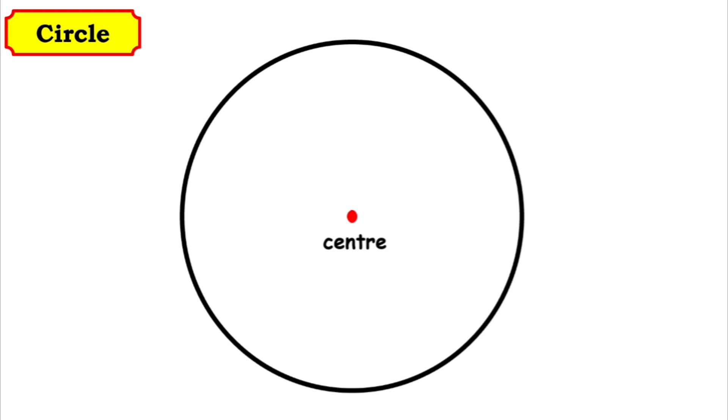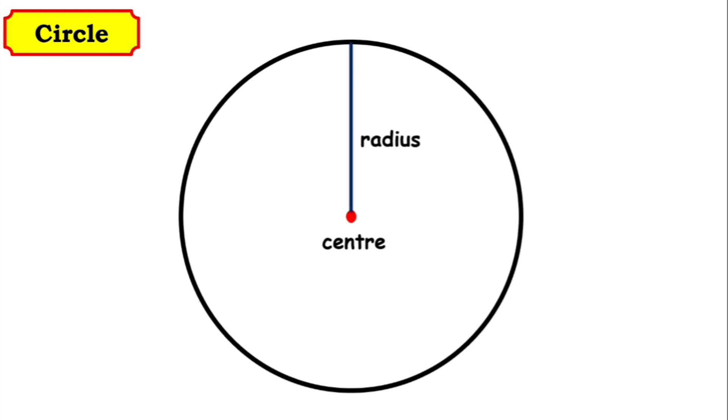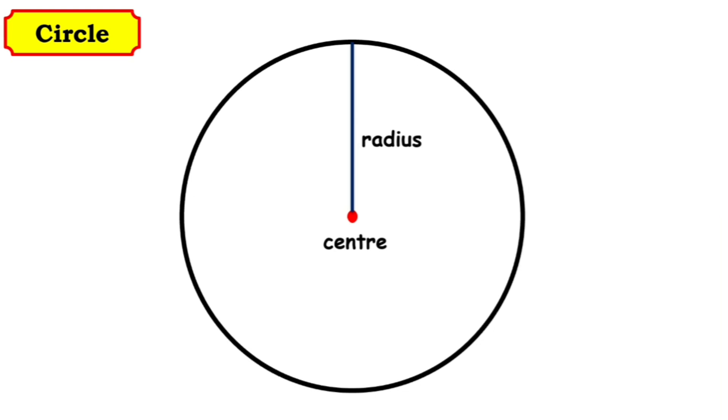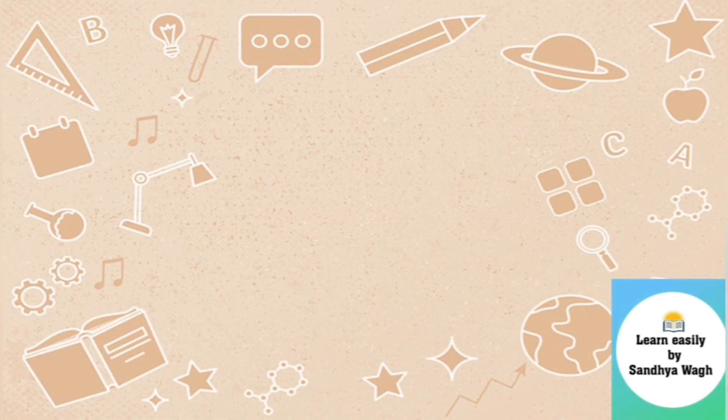Then we learned radius of a circle, a line joining from the center of the circle to any point on the circle is called a radius. After that, we learned a line joining any two points on the circle passing through the center is called diameter, and a line joining any two points on the circle is called chord of a circle. Children, I hope you have understood the basic concepts of circles.